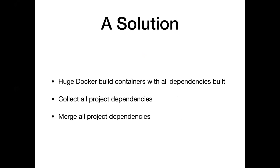The problem we're trying to solve is long dependency times in Docker containers - lots of projects, lots of common dependencies, and per-project optimizations that are unwieldy and error-prone. The solution is to use Docker's multi-stage containers concept. You can build a large build container that has the entire kitchen sink in it, build with it, then pull out your executables and move them into a much smaller and slimmer container. We're going to collect all project dependencies across our company and build a shared container.